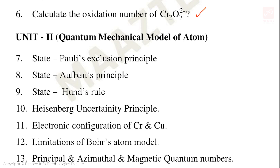Unit 2: Quantum Mechanical Model of Atom. Important topics include Pauli's exclusion principle (very important 3 mark), Aufbau principle and Hund's rule, Heisenberg uncertainty principle (very important), electronic configuration of chromium and copper, limitations of Bohr's atom model, and quantum numbers — principal, azimuthal, and magnetic.